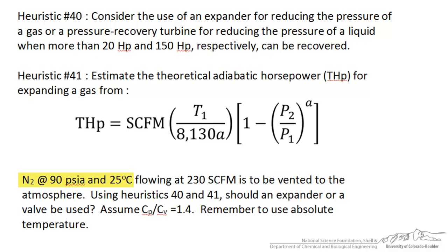In a certain process, we have nitrogen gas at 90 psia and 25 degrees Celsius flowing at a flow rate of 230 standard cubic feet a minute. Now it has to be vented to the atmosphere, so obviously there is a huge pressure reduction from 90 psi to that of atmosphere. We are interested in using both heuristic 40 and 41 to determine whether or not an expander should be put in place or a simple valve.